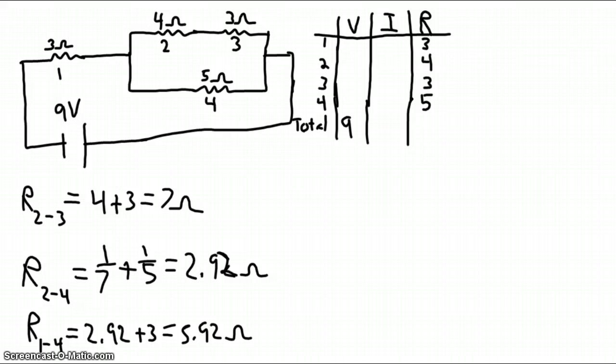Now I have the total resistance, which I will now use to find the total current using Ohm's law V=IR.